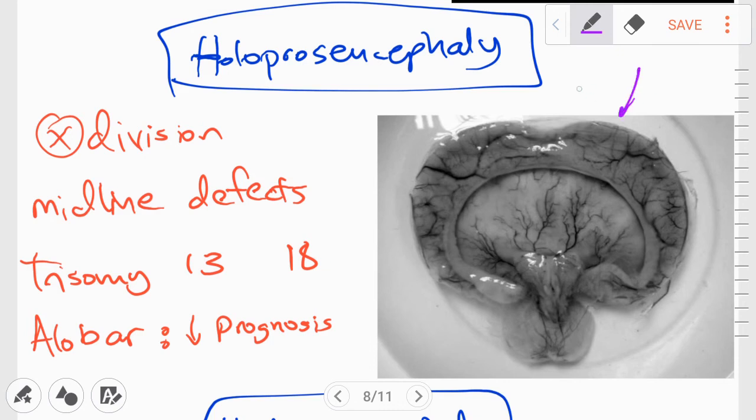Here you can see the brain. And normally, there is supposed to be a division right in the center, but as you can see, there is no division, and the brain is just one whole unit. There is a lack of the division.